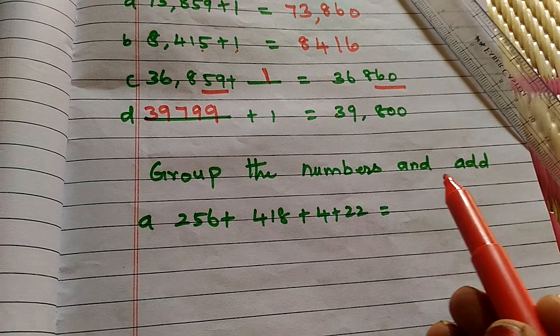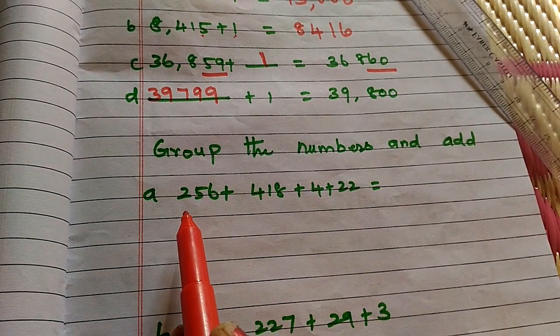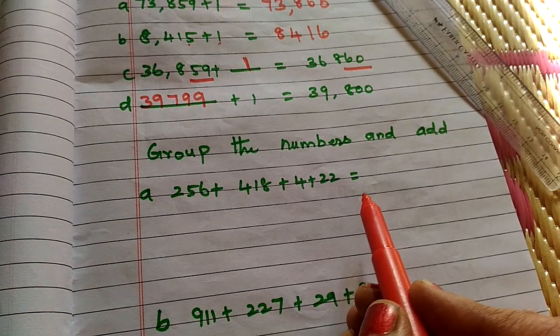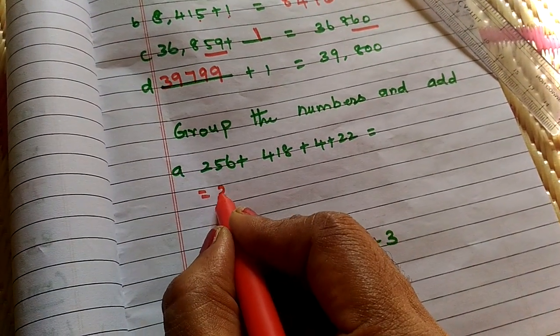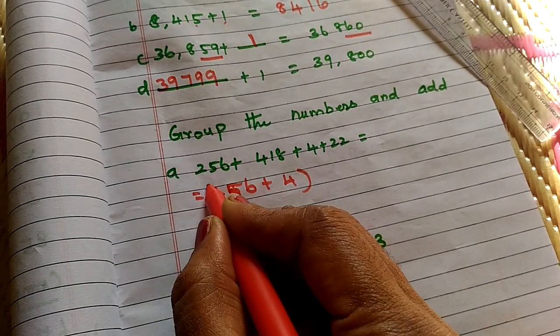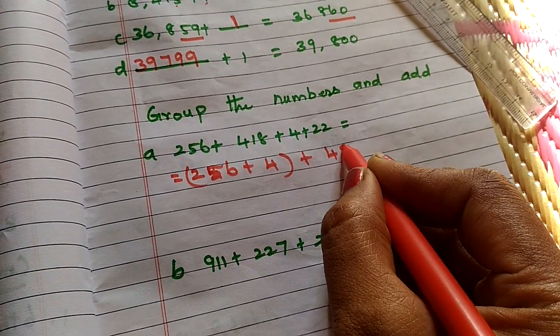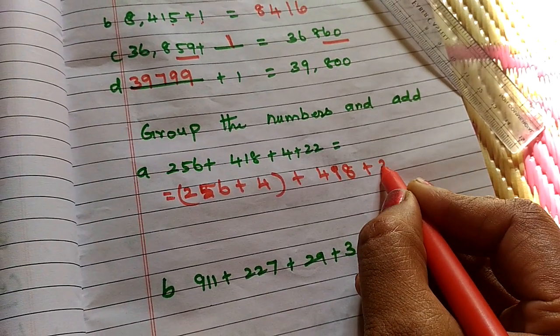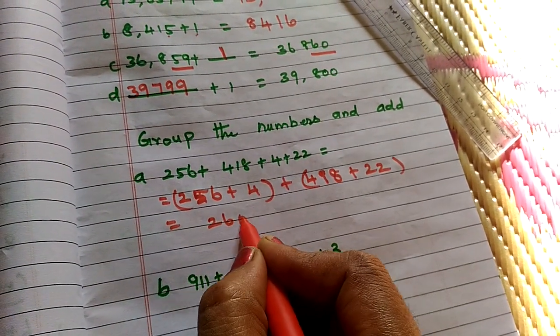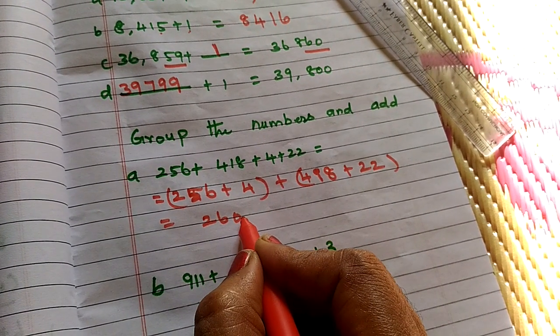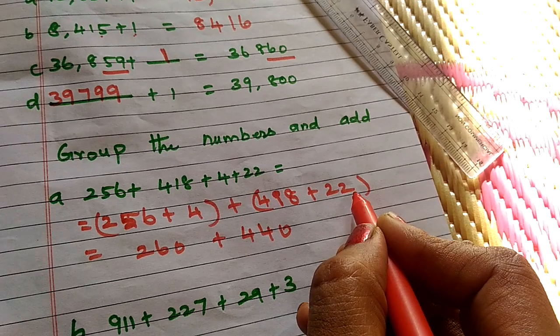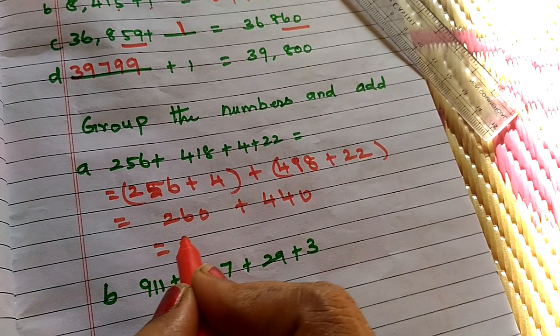Group the numbers and add. 256 plus 418 plus 4 plus 22. See here. 256 plus 4. Then, 418 plus 22. Then, 256 plus 4 is 260 plus 440. 418 plus 22 is 440. Answer is 700.